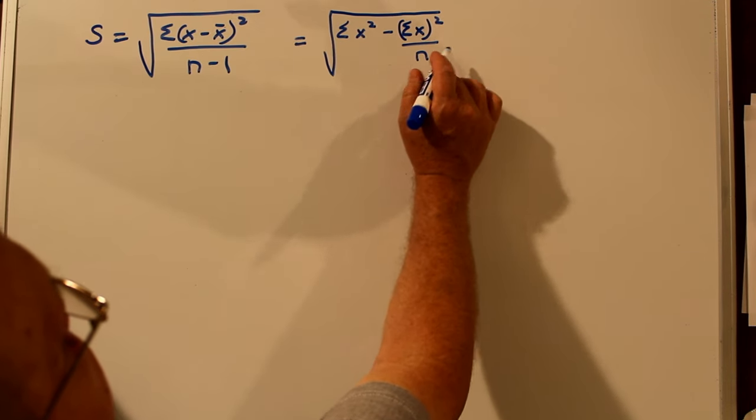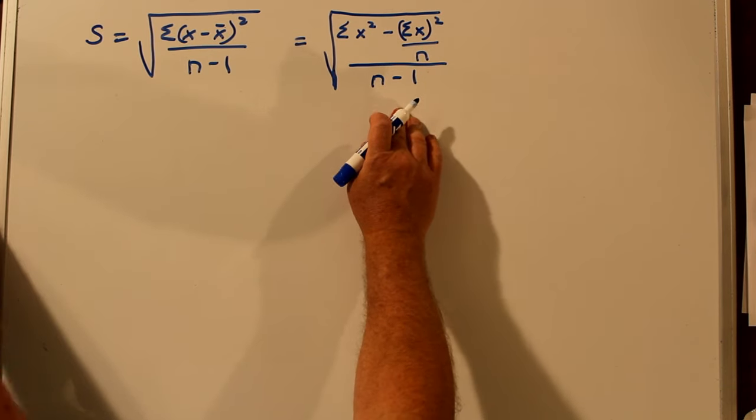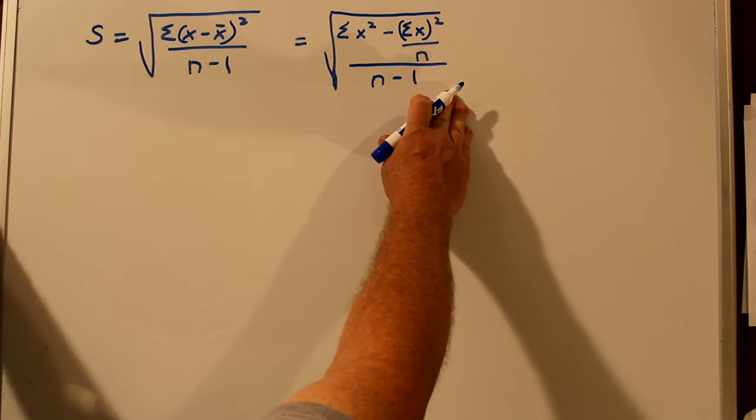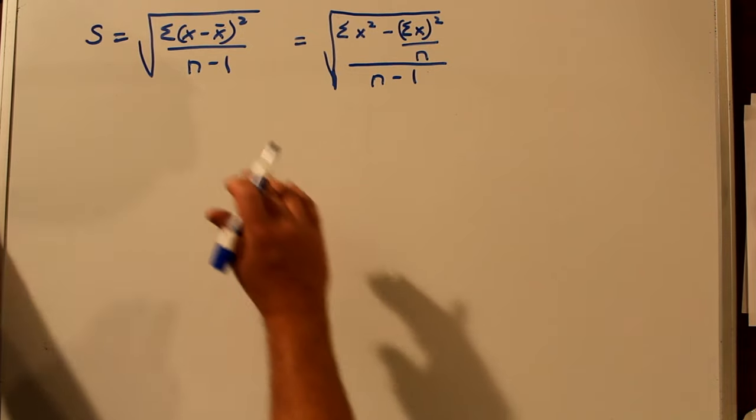Squared, divided by n, the number of your numbers, over n minus one. And everything is under the radical sign. And we can call this one the shortcut method. And you look at it, and it looks pretty complicated for a shortcut. So why is it called the shortcut method? And I'll show you with an example.